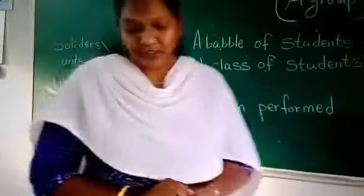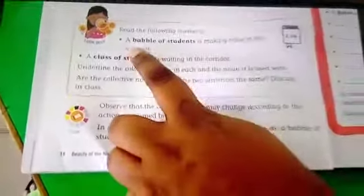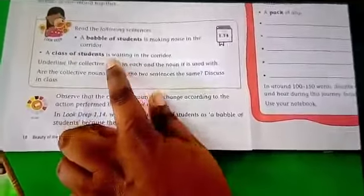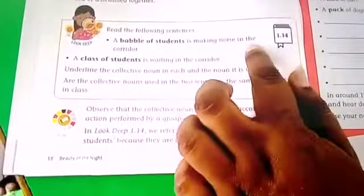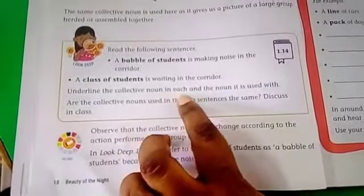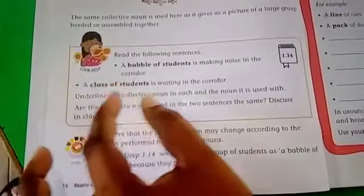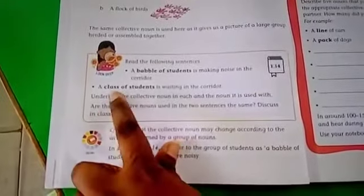Now I am asking you to open today's page. See, 1.40. Read the following sentences: 'A babble of students is making noise in the corridor. A class of students is waiting in the corridor.' Underline the collective noun in each and the noun it is used with. You have to underline the collective noun and the noun which we are using with.